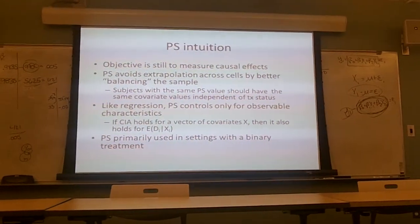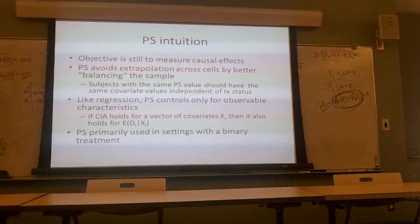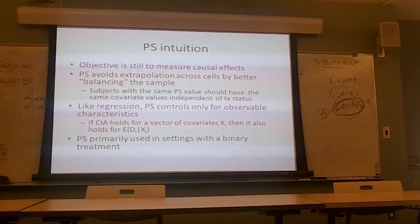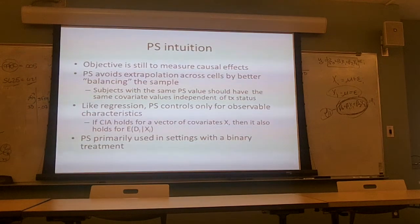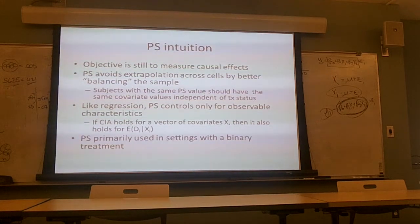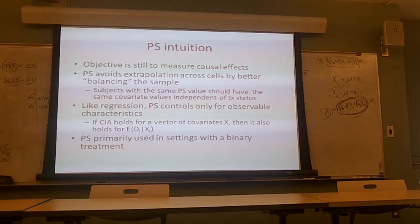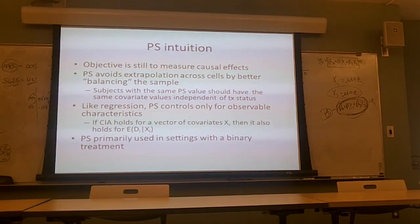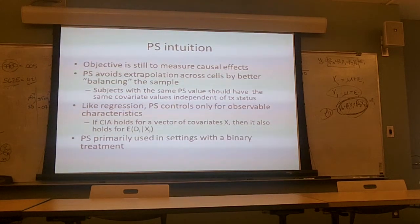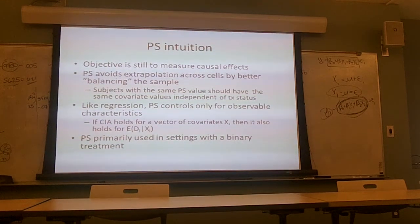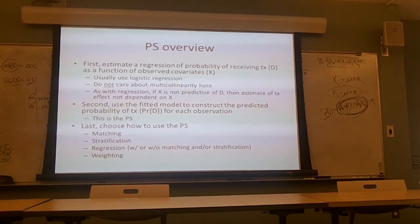We're summarizing this information — we may have lots of different X's — compacting it down into a single measure. Because of this, in nearly all cases propensity scores are used in a binary treatment context. There has been some work to expand this to multi-arm treatments, but I have not seen anybody use propensity scores in the context of a continuous treatment variable. That said, a lot of cases we can turn things into binary treatment settings by truncating or collapsing.